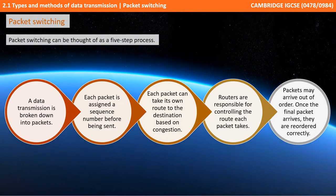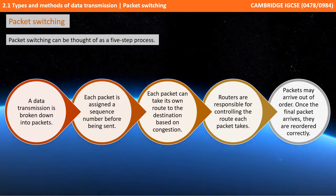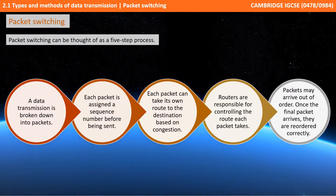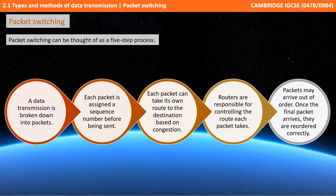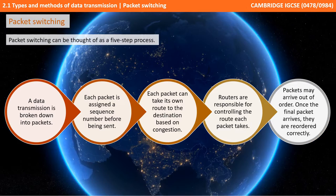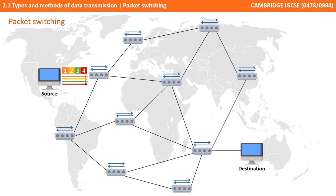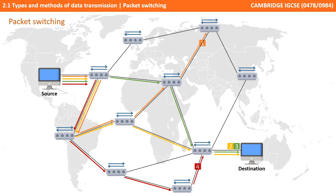Packets may arrive out of order, and once the final packet arrives they're reordered correctly. Here's a little animation showing an example of packets leaving and taking their own routes. As you can see, they've arrived out of order so the destination computer reassembles them correctly.